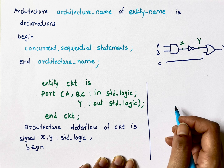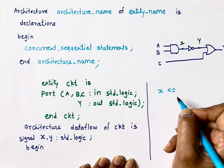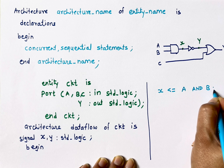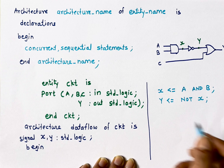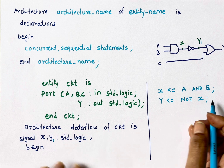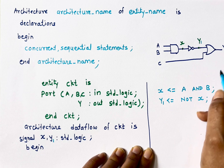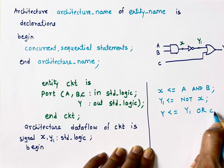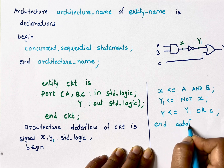In concurrent statements all statements execute in parallel. So: 'x <= a and b;', then 'y1 <= not x;', and 'y <= y1 or c;'. Note we cannot use the same name twice — I renamed Y to Y1 for the intermediate wire. Then 'end data_flow;'. In this way we write architecture.